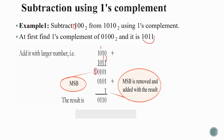After removing the carry, the intermediate result is 0101. We add the carry of 1 to the LSB: 0101 plus 1 equals 0110. This is the final answer for the one's complement subtraction example.